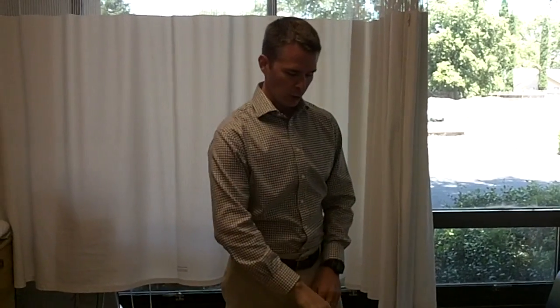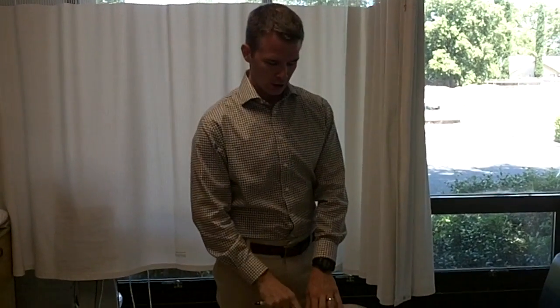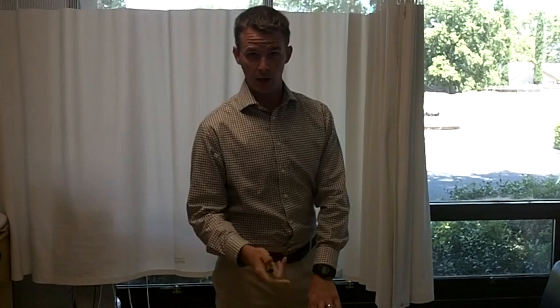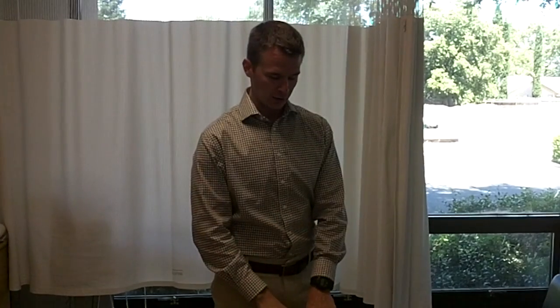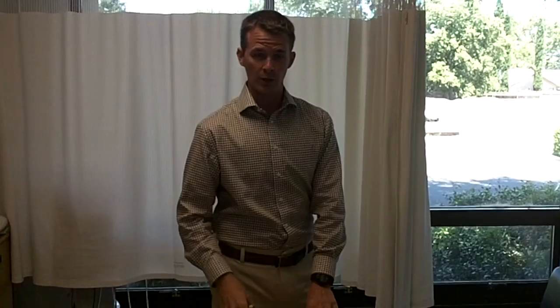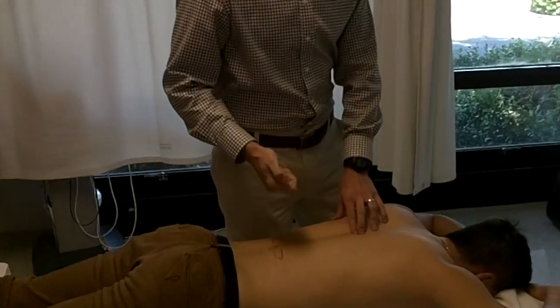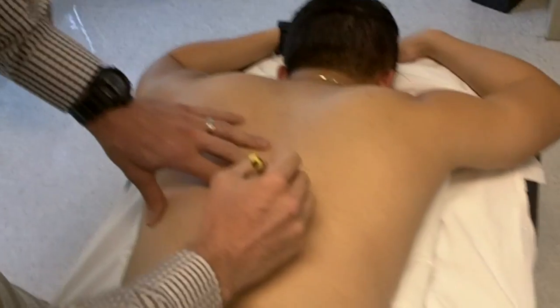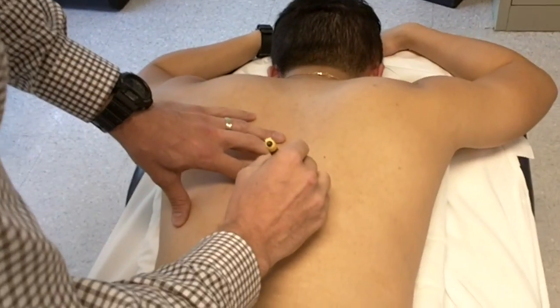In the thoracic spine, we're always taught as a guideline the rule of threes in terms of where the spinous process is in relation to the transverse process. But in anatomy, it's not always consistent. So one way that we can determine if we're at the correct level in terms of spinous process in relation to transverse process is feeling for movement. So again, similar to what we did in the lumbar spine, we're going to look at the thoracic spine here.